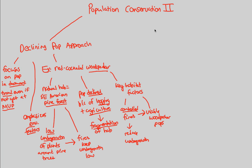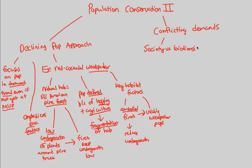The last thing to understand about population conservation is that in a perfect world this all sounds wonderful — but why aren't we saving all the species? It's because we as humans have to face conflicting demands in society today that prevent this. There are conflicting demands of society versus biodiversity conservation.